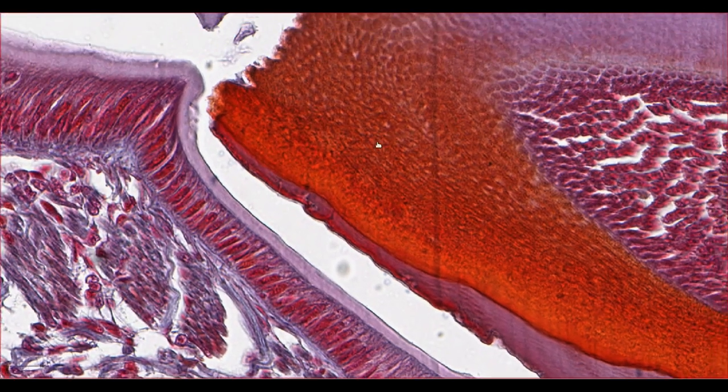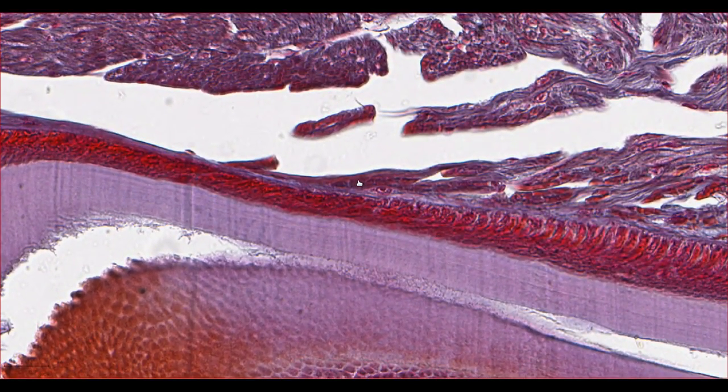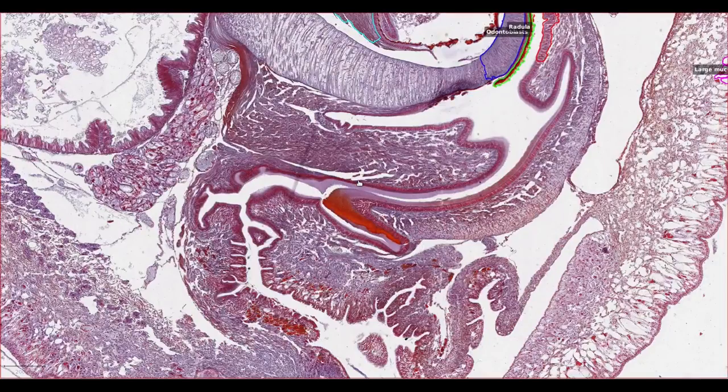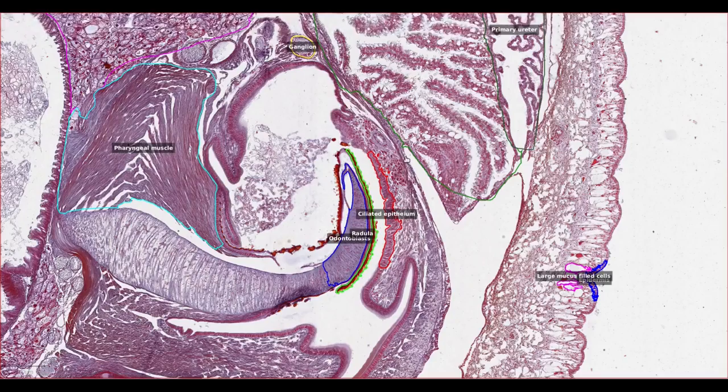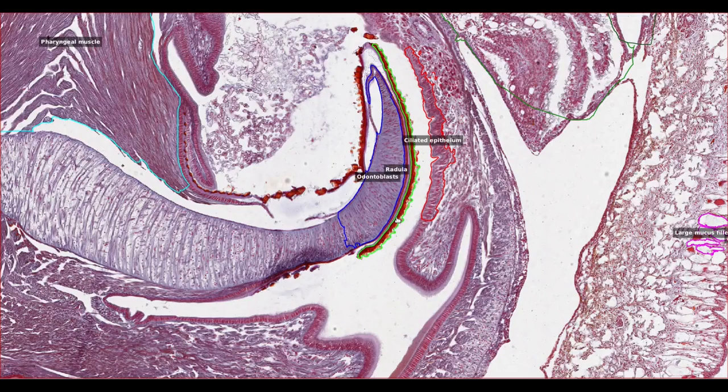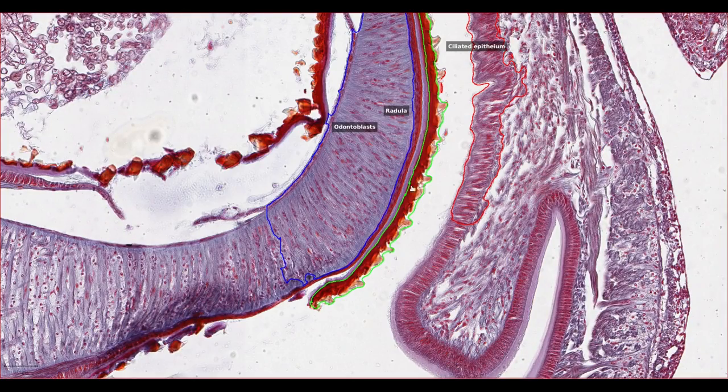As in many other animals, digestion begins with a mechanical grinding step. Rather than having rows of teeth, the snail has an organ called the radula, which we can appreciate just here. We can see it here is a pyramidal-shaped organ, covered by serrated acellular material here, which can be scraped back and forth over the food material to break it down.